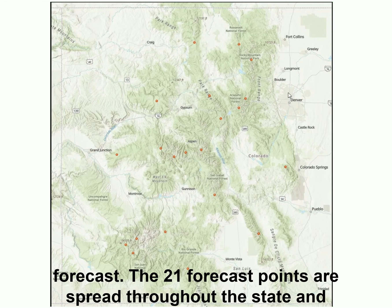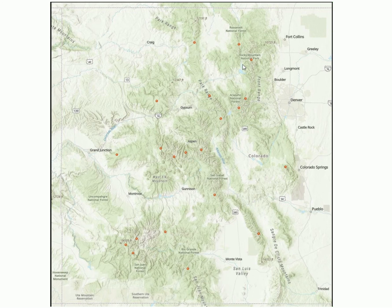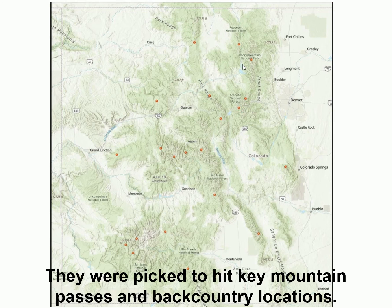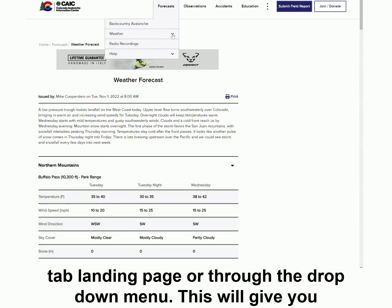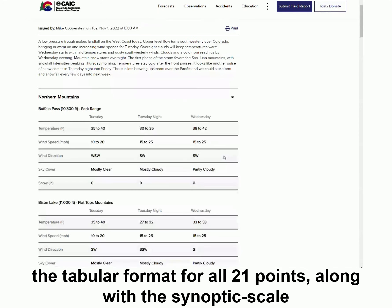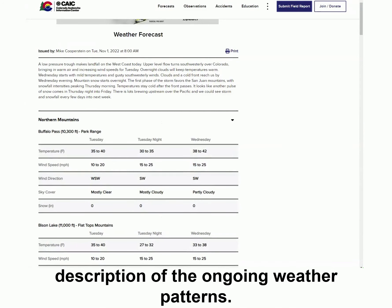The 21 forecast points are spread throughout the state and are indicated by all of these orange dots on this image. They were picked to hit key mountain passes and backcountry locations. You can access the full forecast either through the Forecast tab landing page or through the drop-down menu. This will give you the tabular format for all 21 points, along with the synoptic scale description of the ongoing weather patterns.